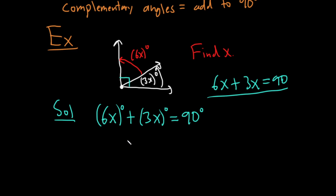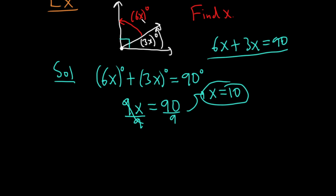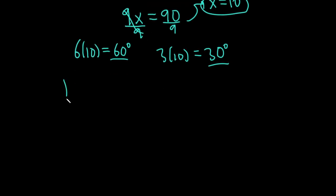Now, whether or not you include the degree here in your work is up to you. But always include it in your final answer. So how do you add these? Well, just like you would in regular algebra, 6x plus 3x is 9x, and this is equal to 90. And then since the x is being multiplied by 9, we can solve for x by dividing by 9, and that's equal to 10. So we've got x. To find the angles, what you would do is you would take your x and plug it back in. So your first angle would be 6 times 10, which is 60 degrees. And your second angle would be 3 times 10, which would be 30 degrees. So now you have two angles that add to 90, so they actually are complements.